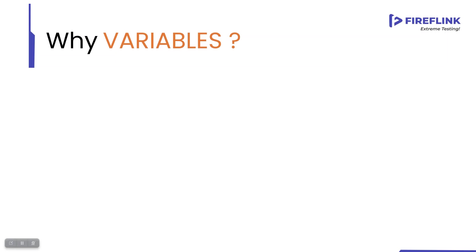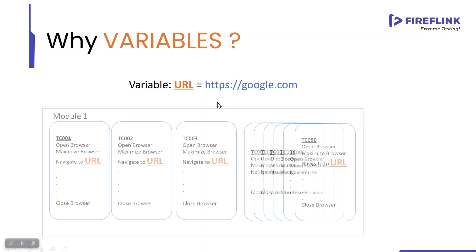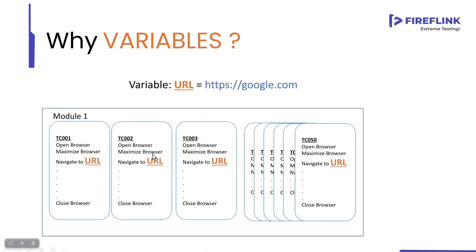Why do we need these variables? Instead of hard coding the value, I will store that value inside a variable called URL. This URL variable, I will use in my scripts. Instead of hard coding the data, I will store the data in a variable and use that variable in my automation script. So now in the same module, I again have the same 50 scripts.